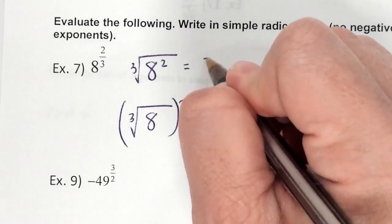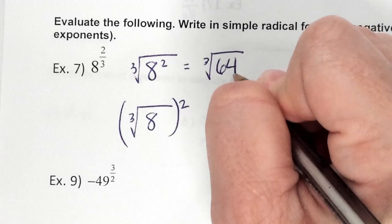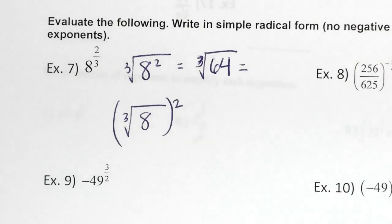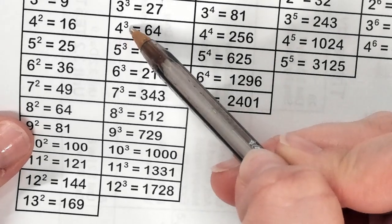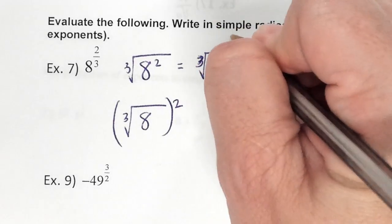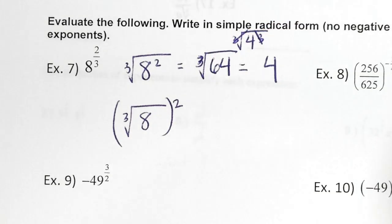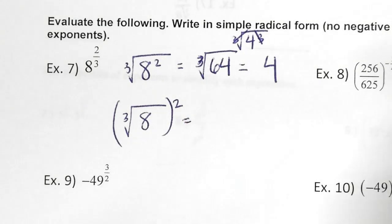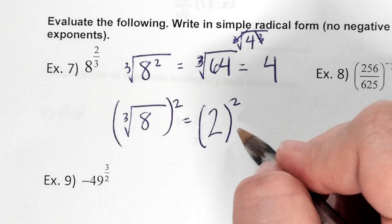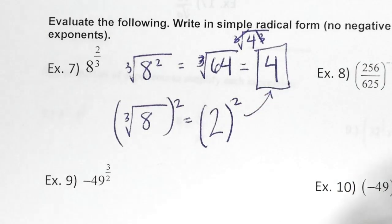What is 8 squared? 64. Is 64 a perfect cube? Yes — 64 is 4 cubed. So the cube root of 64 is 4. The reason we don't keep the cube is because the cube root canceled that cube — and that's why it's just 4. I want to show you that both ways give the same answer. Eight is also a perfect cube — the cube root of 8 is 2. And 2 squared is 4. So it doesn't matter which method you follow.